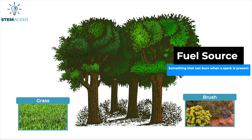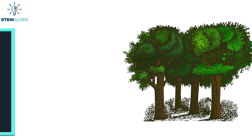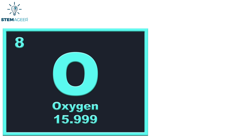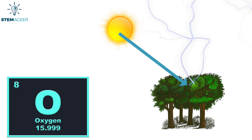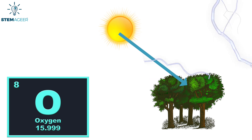When grass, trees, and other sources are really dry, it makes them even better fuel sources. Keep in mind that structures like houses and buildings are also fuel sources. Oxygen is a gas that is present in the air. A heat source can ignite a fuel source in the presence of oxygen. For example, after very dry conditions, lightning may strike a tree or other fuel source, igniting it, which in the presence of oxygen may grow into a fire.